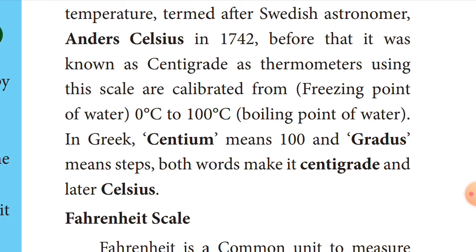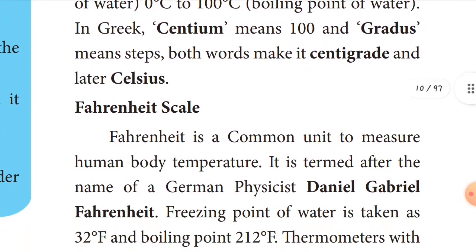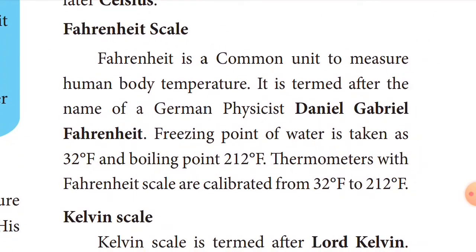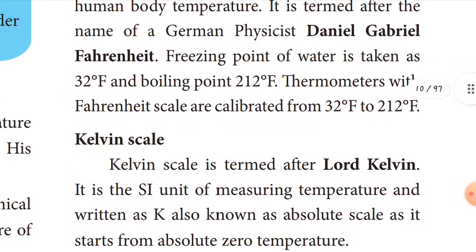Now let's see the Fahrenheit scale. Fahrenheit is a common unit for measuring human body temperature. It is termed after the German physicist Daniel Gabriel Fahrenheit. The freezing point of water is taken as 32 degrees Fahrenheit, and the boiling point of water is 212 degrees Fahrenheit. The Fahrenheit scale is calibrated from 32 degrees Fahrenheit to 212 degrees Fahrenheit.